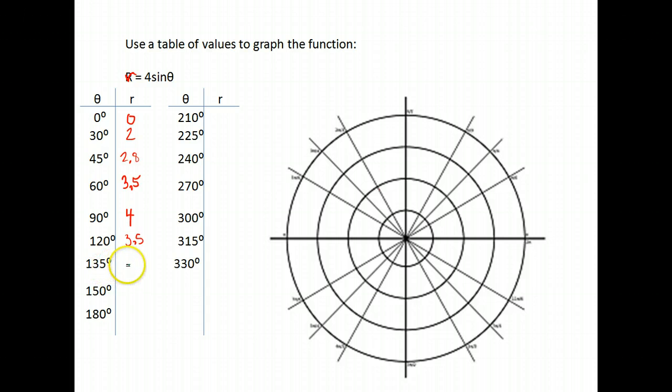And the same here. The sine of 135 is 0.7 times 4 is 2.8. The sine of 150 is 0.5, which times 4 is 2. The sine of 180 is 0, which times 4 is just 0.